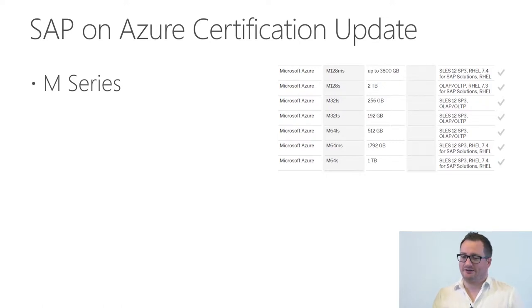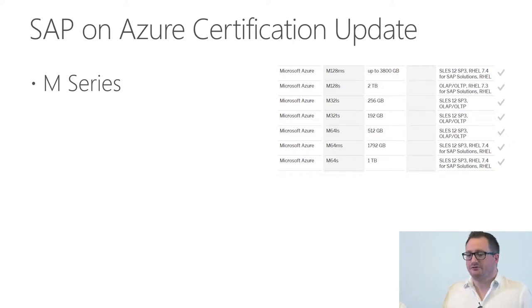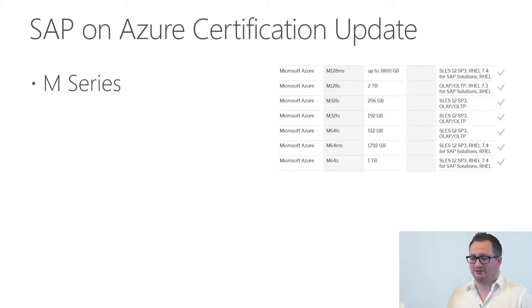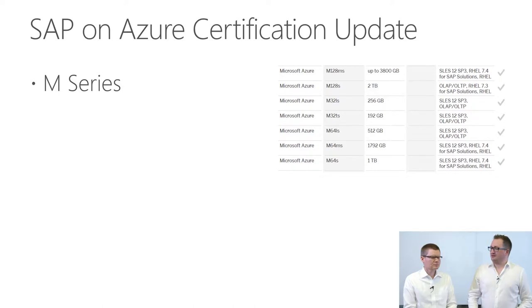Looking at the IaaS platform directory extract related to M series, we see the various versions up to 4 TB of RAM, available in more than 12 regions. The M series is the SKU made for HANA and it is certified. Regarding the write accelerator prerequisite: there is a non-volatile module inside the M series that drastically improves performance for writing to the HANA transaction log. It's actually a hard requirement to use this on the HANA transaction log disk.